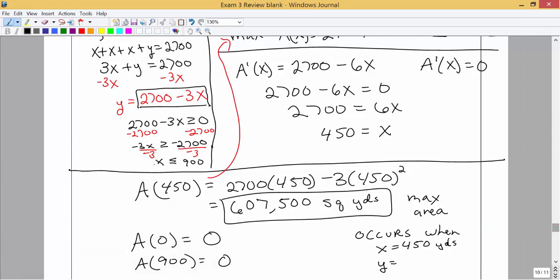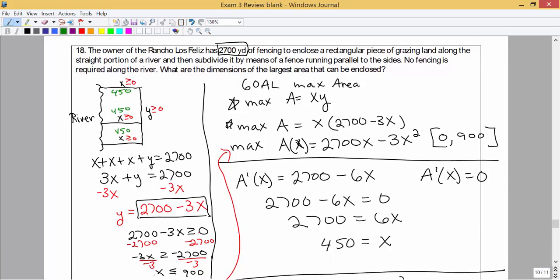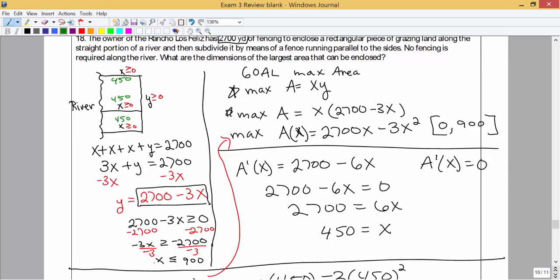Okay, so we want to know the dimensions. So if x is equal to 450, which was the length of these links of this parallel fence, so 450. And what does y have to be? Well, we had a little description for y in terms of x: y is equal to 2700 minus 3x. So the y value now would be 2700 minus 3 times 450. That was the x value that we found. So we get y is equal to 1350.